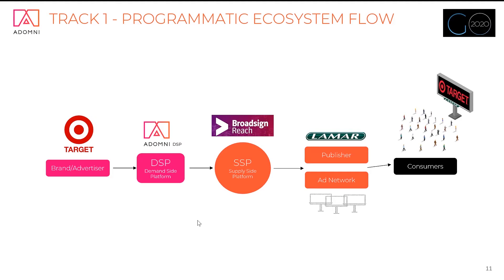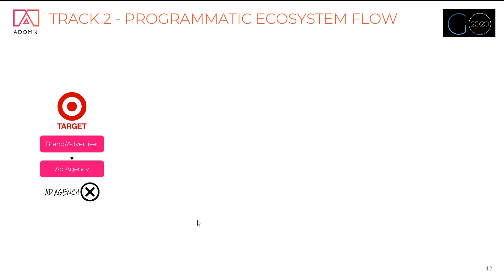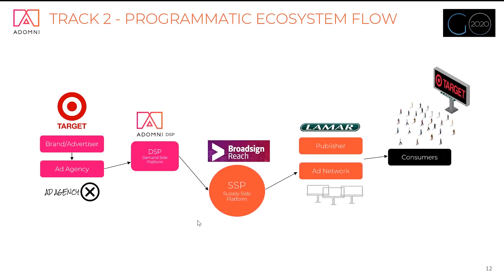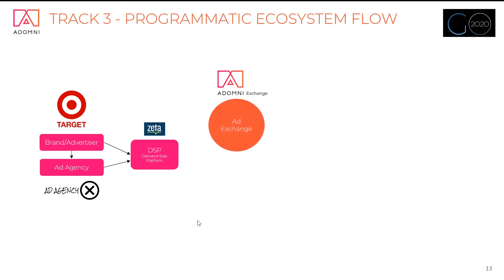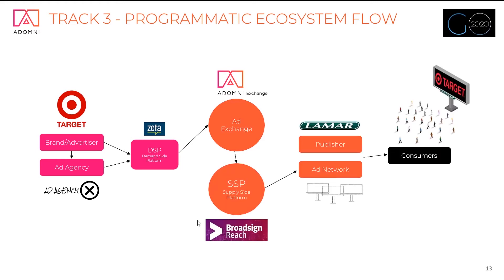The second track is very similar, except the brand's ad agency handles strategy, planning, and execution through the ecosystem. The third programmatic track is when the brand or agency purchases through an omni-channel demand-side platform like Zeta Global, which connects to the Adomni ad exchange and then through the rest of the ecosystem all the way to the screens. In that case, Target's mobile, desktop, connected TV, and out-of-home could all be purchased in the same place.